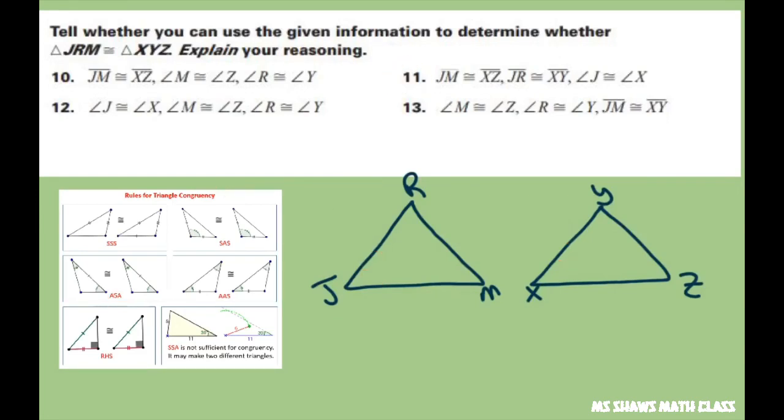And for 12, let's look at that one. We have angle J is congruent to angle X, angle M is congruent to angle Z, and we have these three are congruent. So we don't have an angle angle angle. So it doesn't follow our rules. So this would be a no. It doesn't determine that the triangles are congruent.